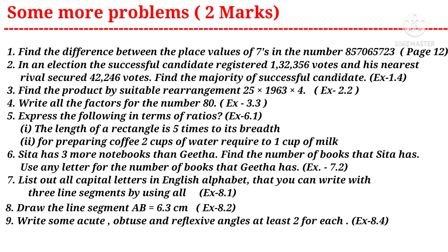Question four: write all the factors for the number 80 — a question from the third chapter. Question five: express the following in terms of ratios — a question from the sixth chapter. Question six: Sita has three more notebooks than Geetha; find the number of books that Sita has, using any letter for the number of books that Geetha has — a question from the seventh chapter. Question seven: list out all capital letters in the English alphabet that you can write with three line segments by using all — a question from the eighth chapter.